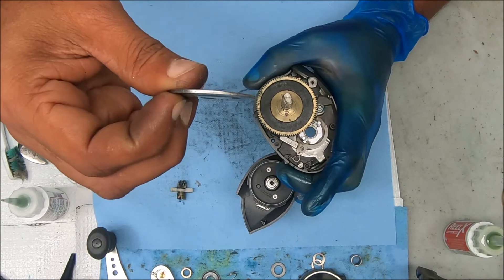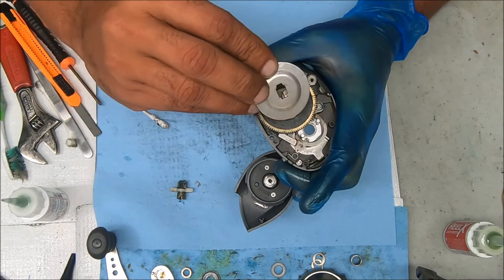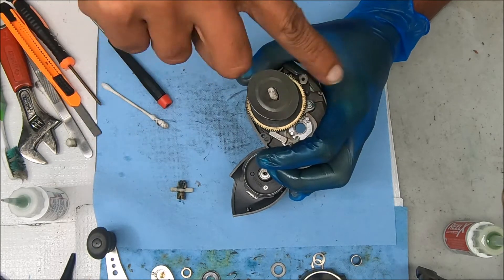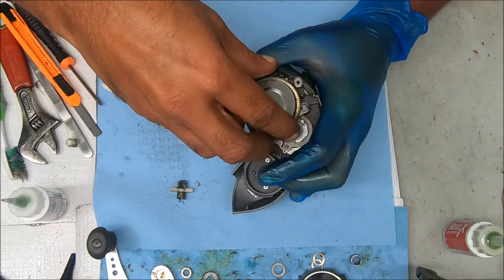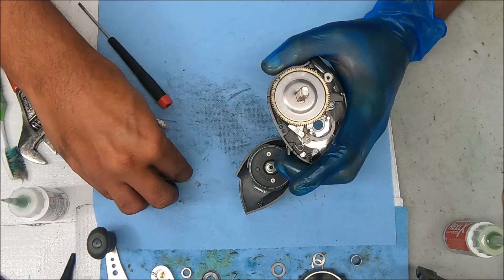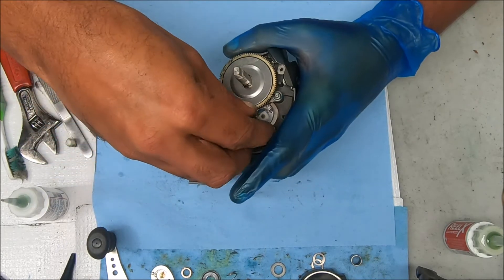And don't forget that curved end on this washer is facing up. The curved end, the bold part is up. On with that. Now we can take our pinion gear and just drop that on here.